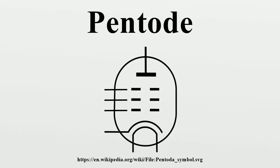Usage: Pentode tubes were first used in consumer-type radio receivers. A well-known pentode type, the EF-50, was designed before the start of World War II, and was extensively used in radar sets and other military electronic equipment. The pentode contributed to the electronic preponderance of the Allies. The Colossus computer and the Manchester small-scale experimental machine used huge numbers of EF-36 pentode tubes.